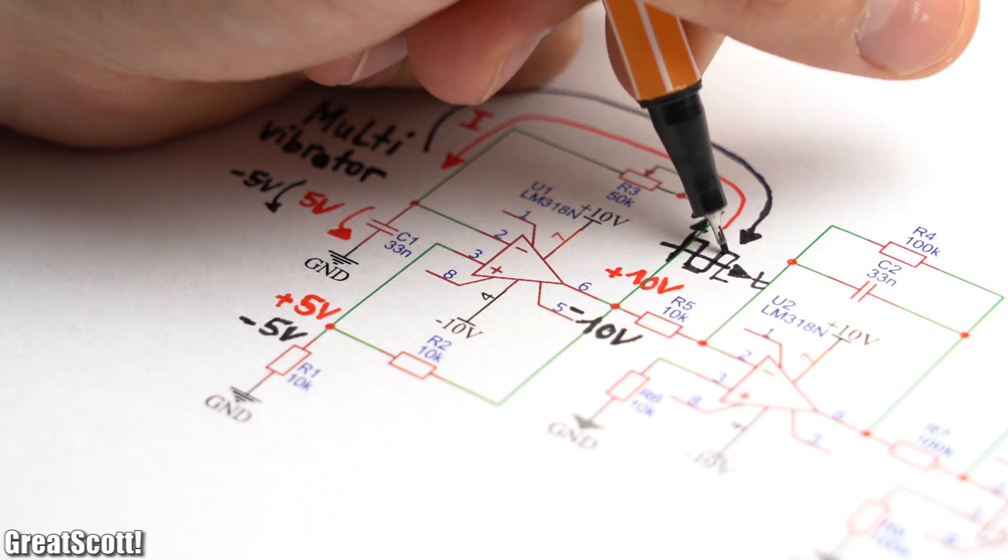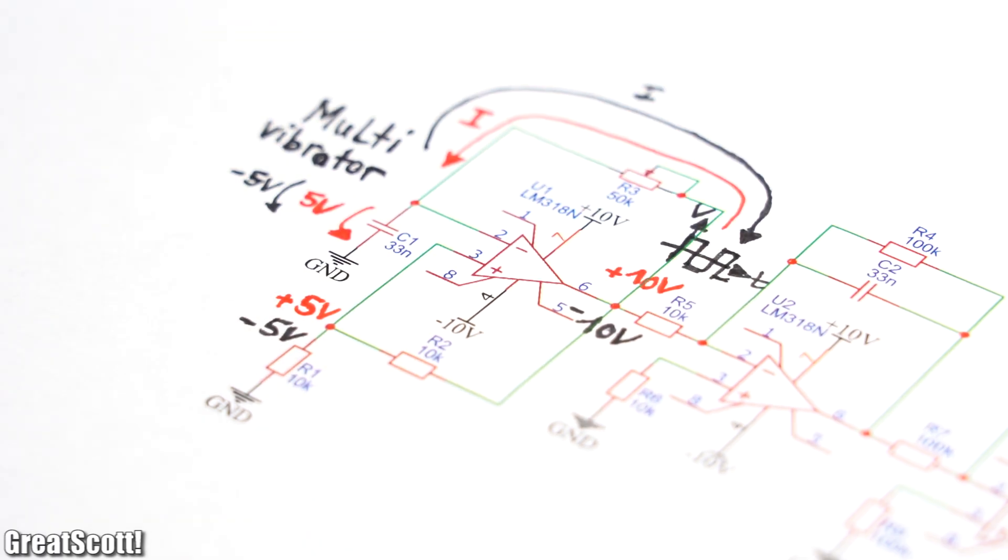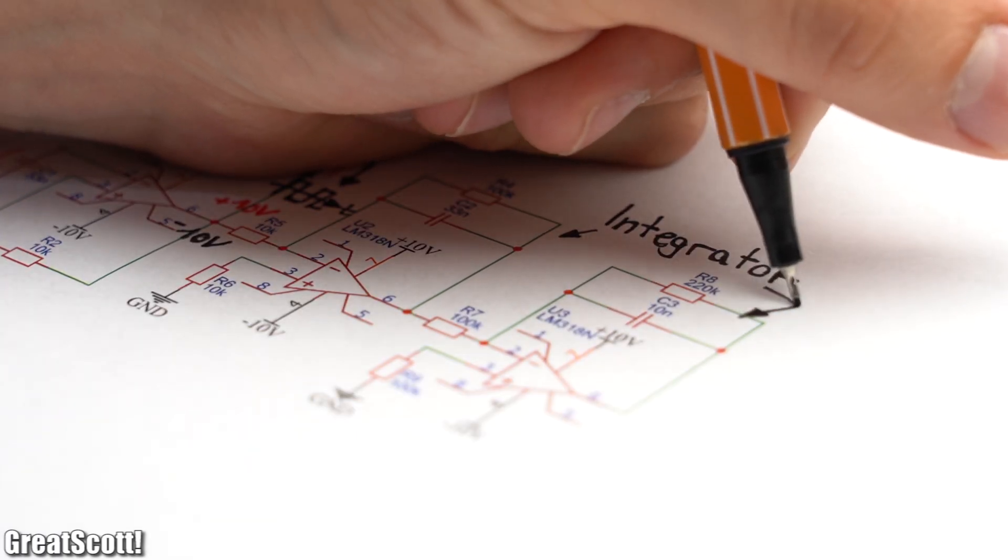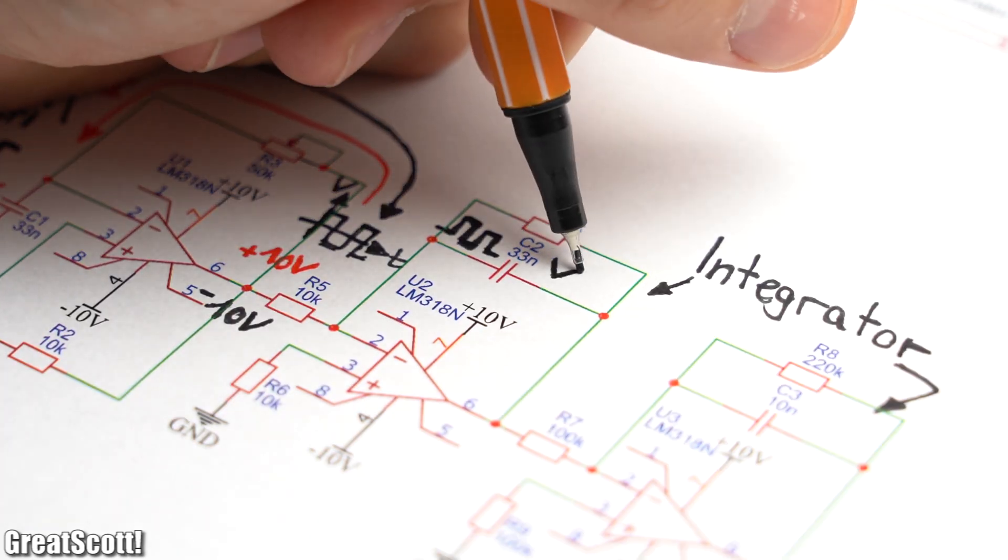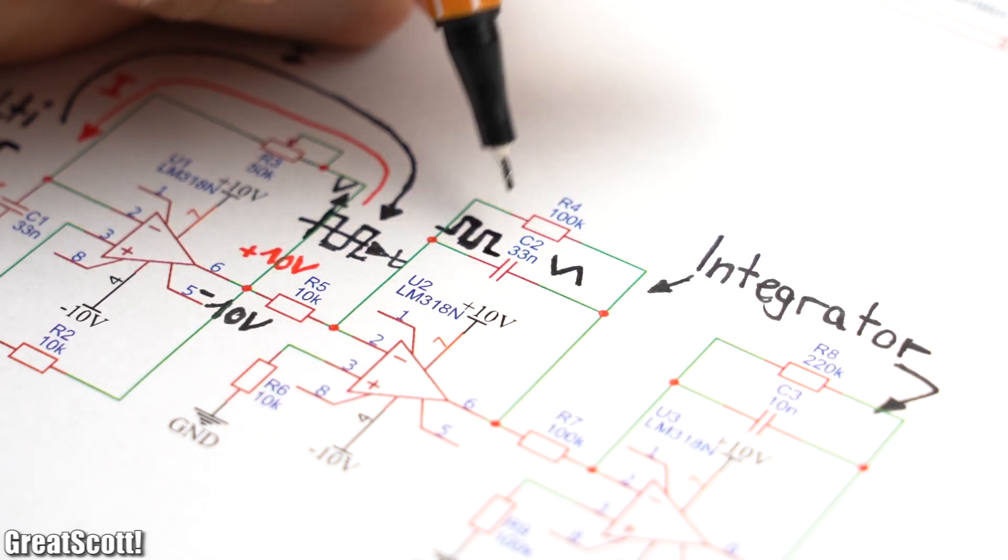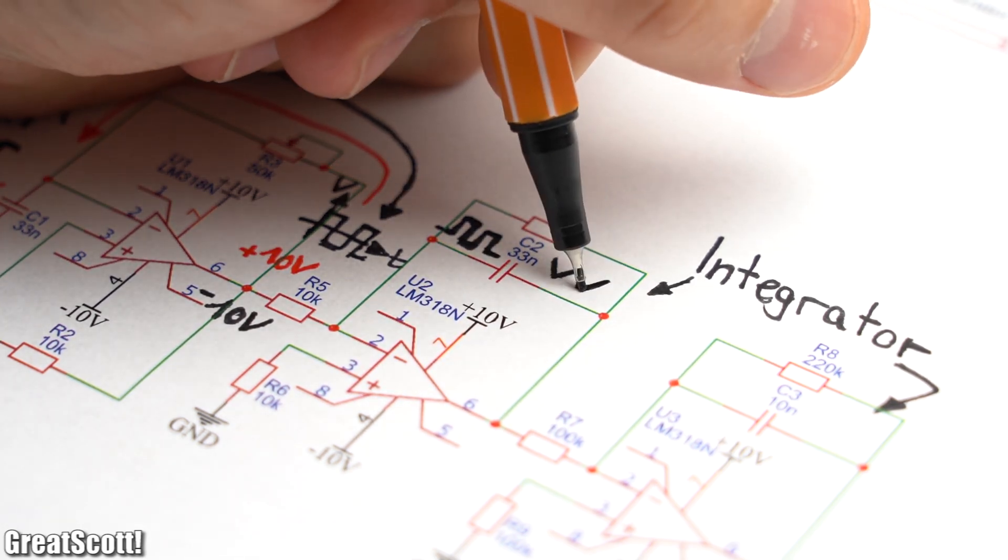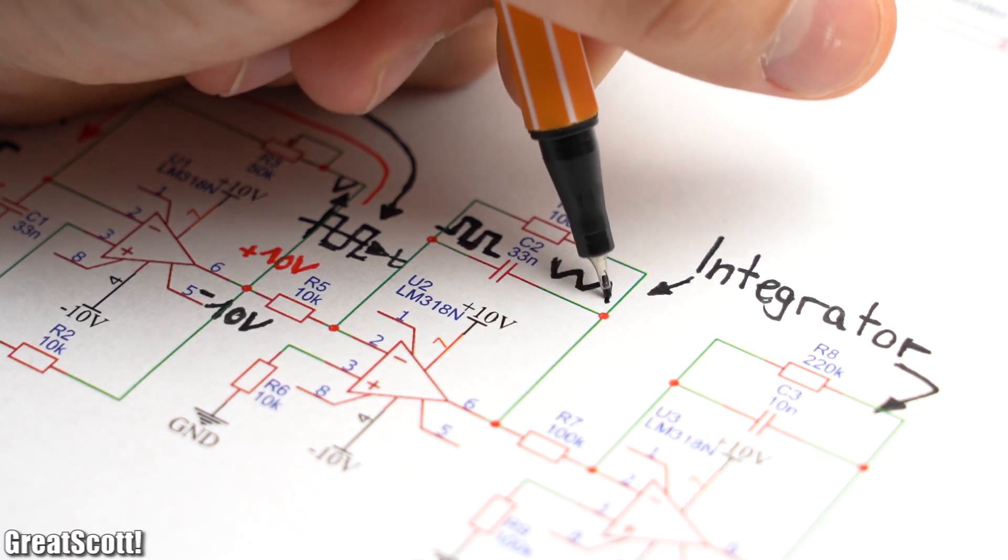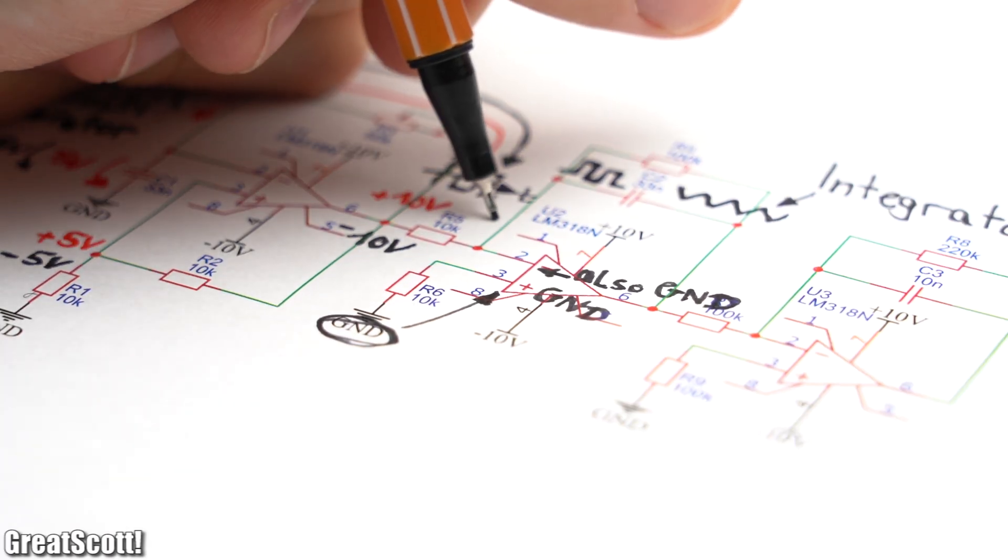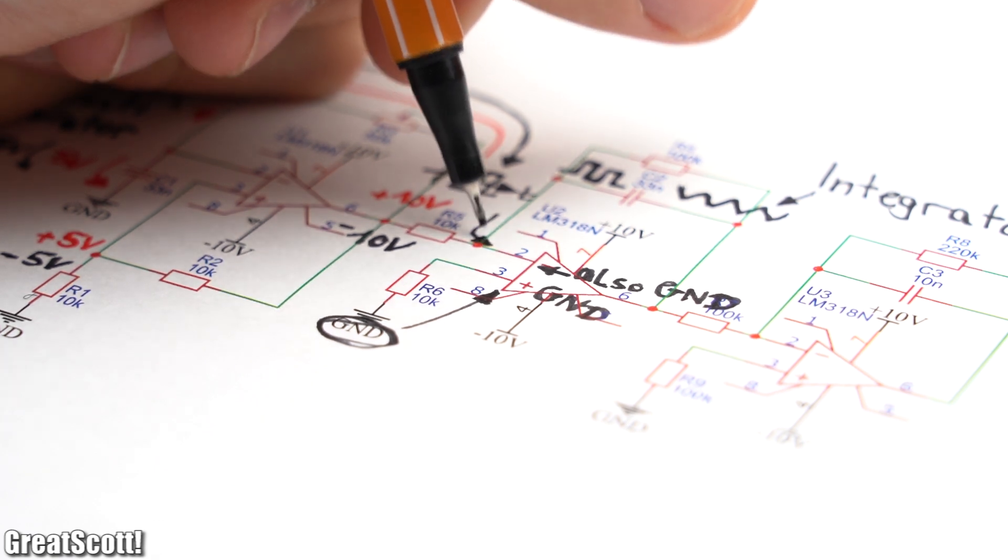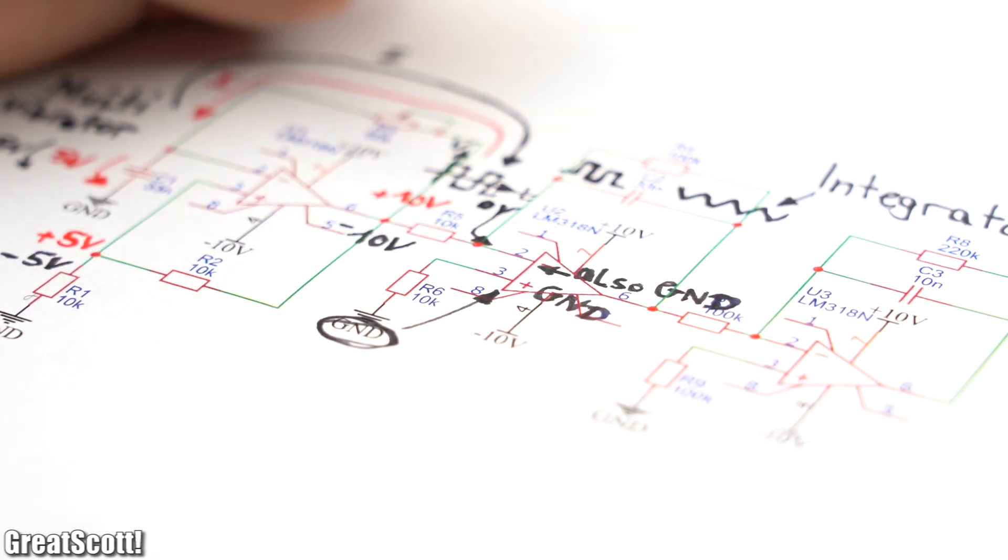At the second and third stage we got classical integrator op-amp circuits, whose output will fall negatively if a positive constant voltage is applied and rise positively if a negative constant voltage is applied. It does that to, like always, keep the inverting inputs at the same defined voltage level as the non-inverting inputs.